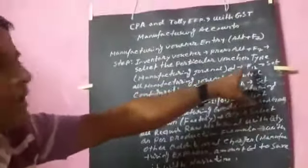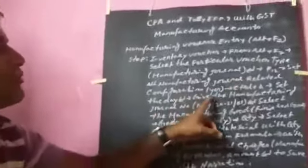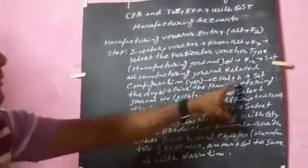Next press enter, then press F2, then set all manufacturing journal related configuration, then press Ctrl plus C.